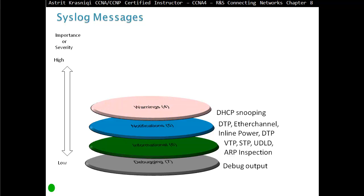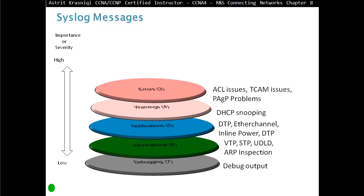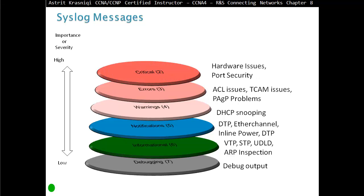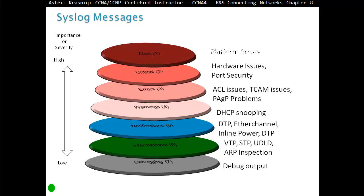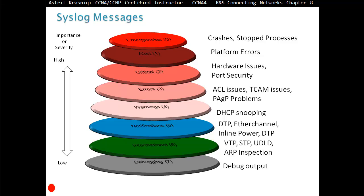Severity 4 is warning — for example, DHCP snooping. Severity 3 is errors — ACL issues, TCAM issues, PACP problems. Severity 2 is critical — hardware issues, port security, and so on. Severity 1 is alerts — platform errors. Severity 0 is the highest or most important severity: emergencies — crashes, stop processes. If we enable monitoring at severity level 4, we're going to see everything at level 4 and below, including levels 0, 1, 2, 3, and 4. If we enable syslog severity of 7, we're going to see all log messages.